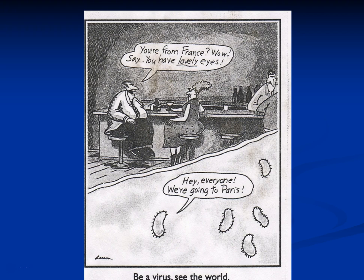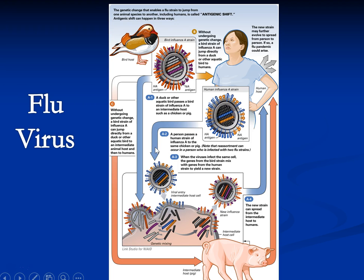One thing that can happen much more easily now with bacterial or viral infections is that they can travel around the world relatively quickly. If you think about how many people travel across the ocean daily, if a disease starts in China, it won't take long to get to the United States. The most dangerous flu viruses are those that infect birds but then mutate enough to infect a person. Since people have not been exposed to this type of virus, the death rate can be much higher — same with a virus from a pig that mutates enough to infect humans.